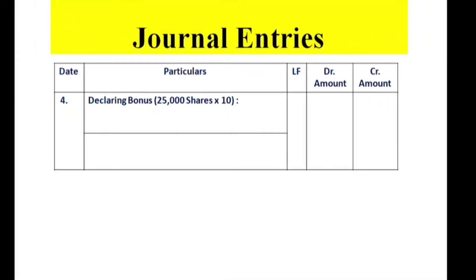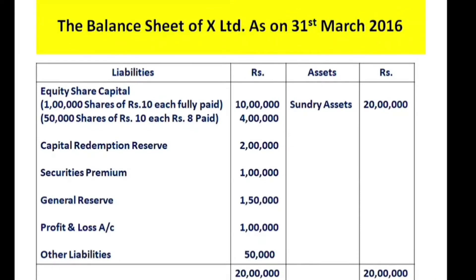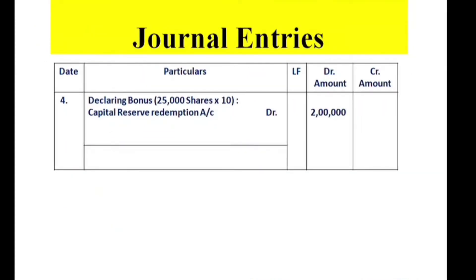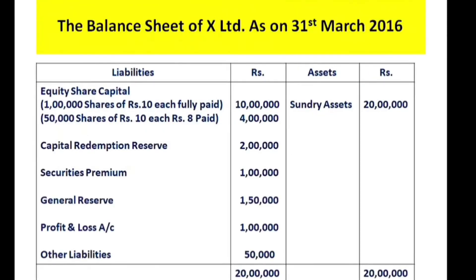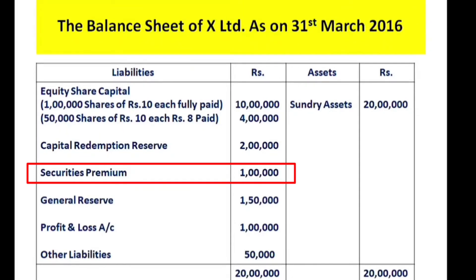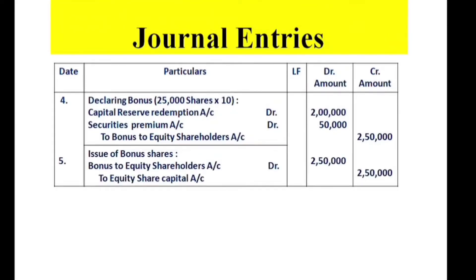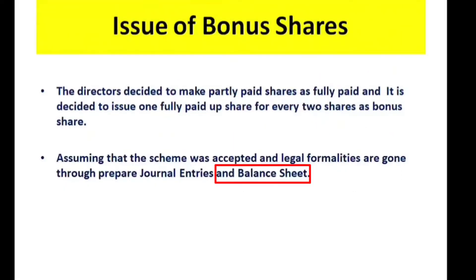Declaring bonus — 25,000 shares × ₹10 = ₹2,50,000. Using Capital Redemption Reserve: Capital Redemption Reserve Account Dr. ₹2 lakhs, Securities Premium Account Dr. ₹50,000, to Bonus to Equity Shareholders Account ₹2,50,000. Then: Bonus to Equity Shareholders Account Dr. to Equity Share Capital Account — for the 25,000 additional bonus shares issued.